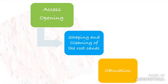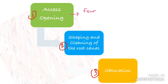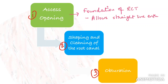As we all know, endodontic treatment can be divided into three main steps: access cavity preparation, shaping and cleaning of the root canal, and obturation. An ideal access cavity forms the foundation of the root canal procedure and allows a straight entry into the canal orifices. An improperly prepared access cavity can interfere with instrumentation, disinfection and obturation, therefore affecting the prognosis of endodontic treatment.